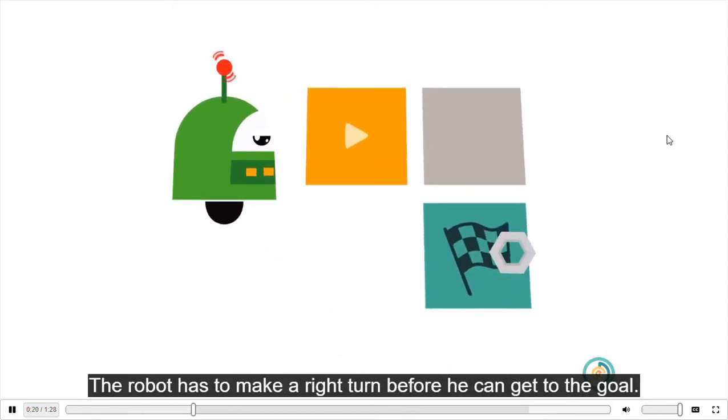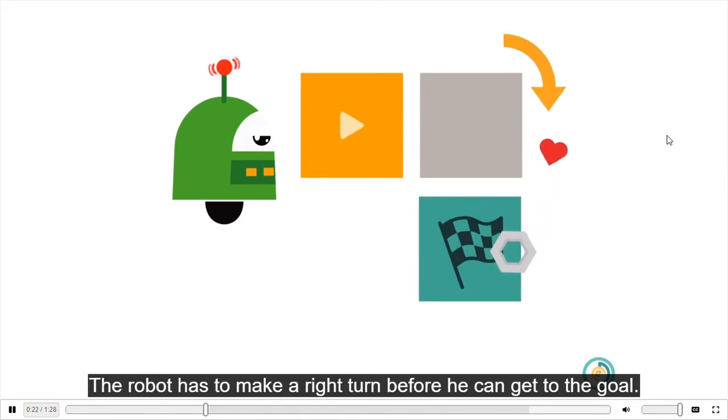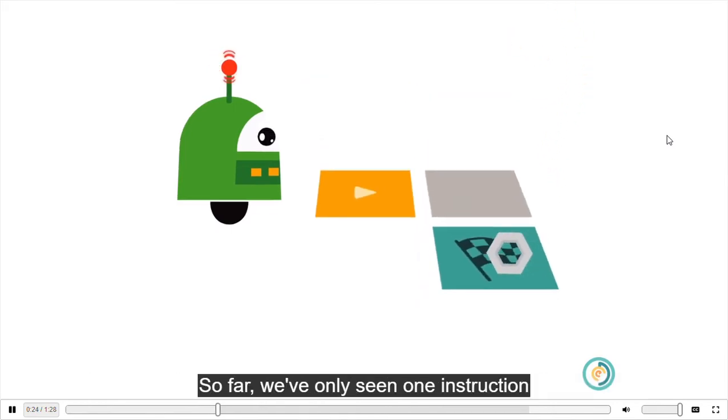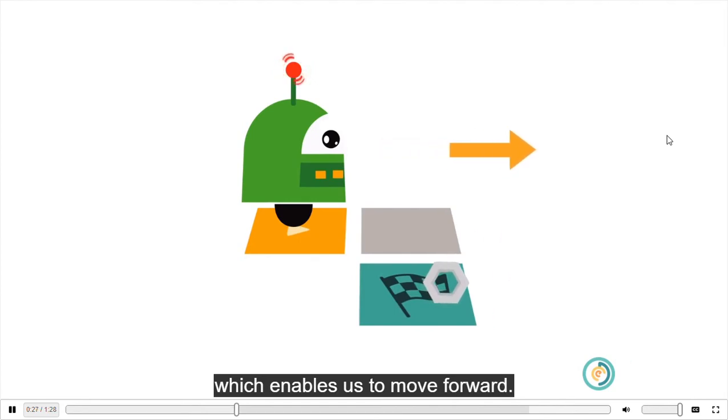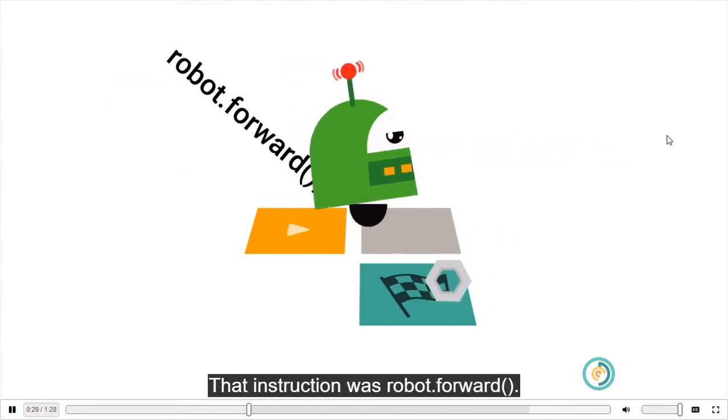The robot has to make a right turn before he can get to the goal. So far, we've only seen one instruction which enables us to move forward. That instruction was robot.forward.